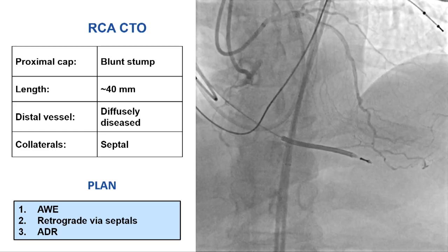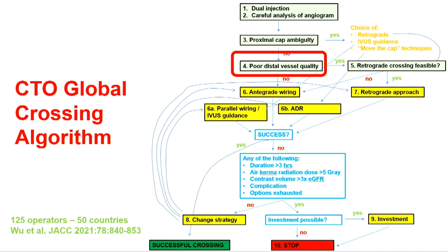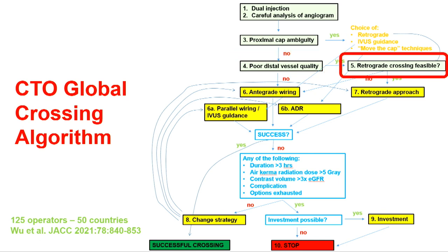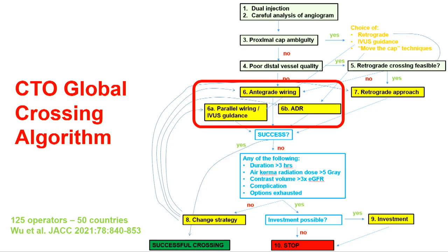The fifth parameter is whether you have retrograde crossing options — previously termed interventional collaterals, now called retrograde crossing options, as bypass grafts are not really collaterals. Septal and bypass graft routes are preferred; epicardial routes are more complex but can be done by experienced operators. Step six is antegrade wiring: if there is no ambiguity and a nice big distal vessel, start with antegrade approach. Antegrade wiring success has been improving with new equipment, wires, and microcatheters.